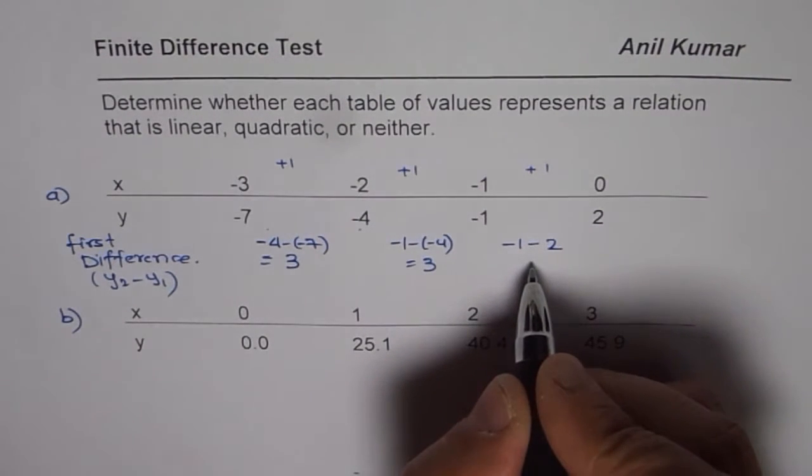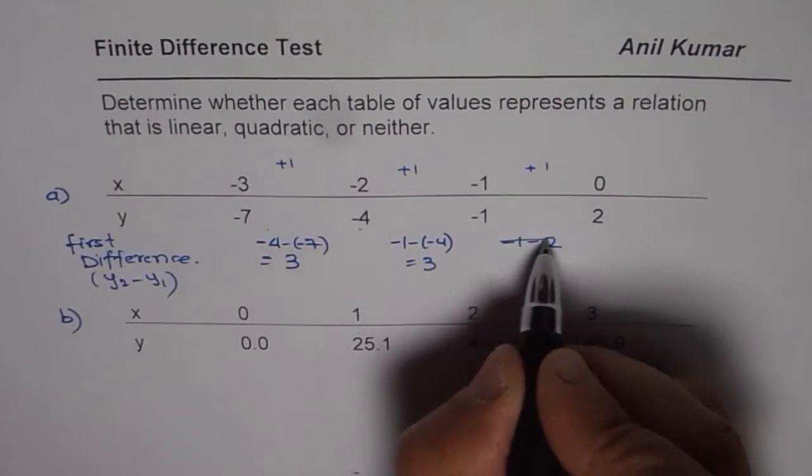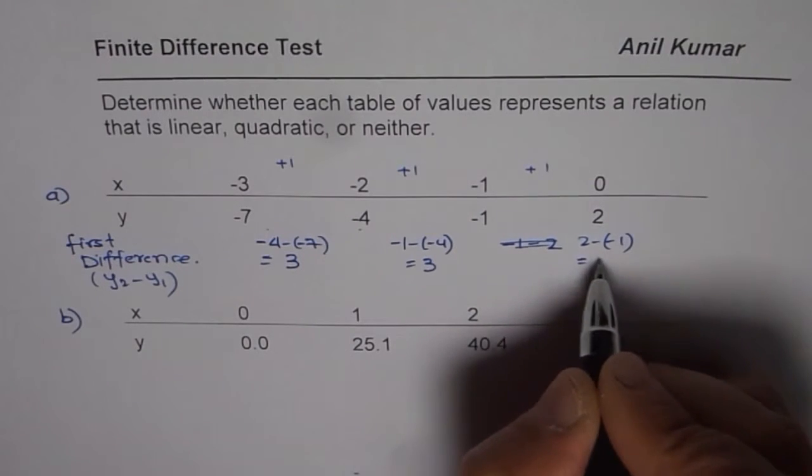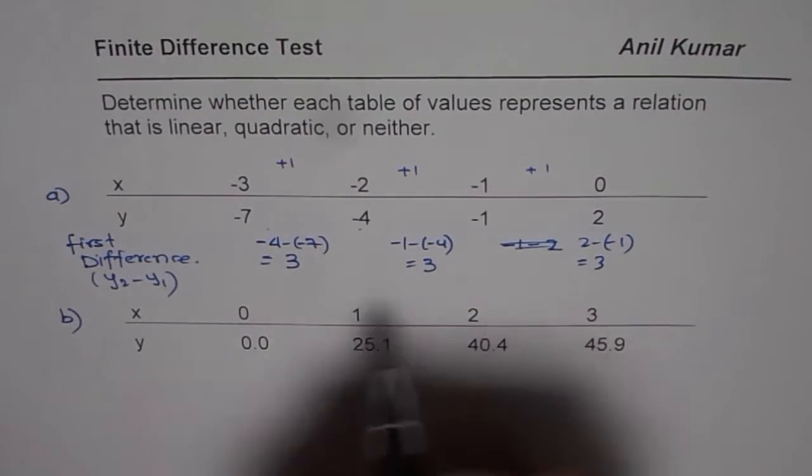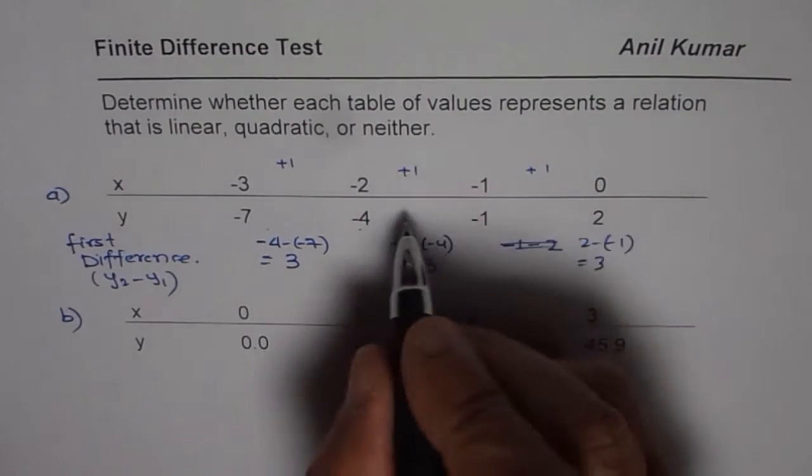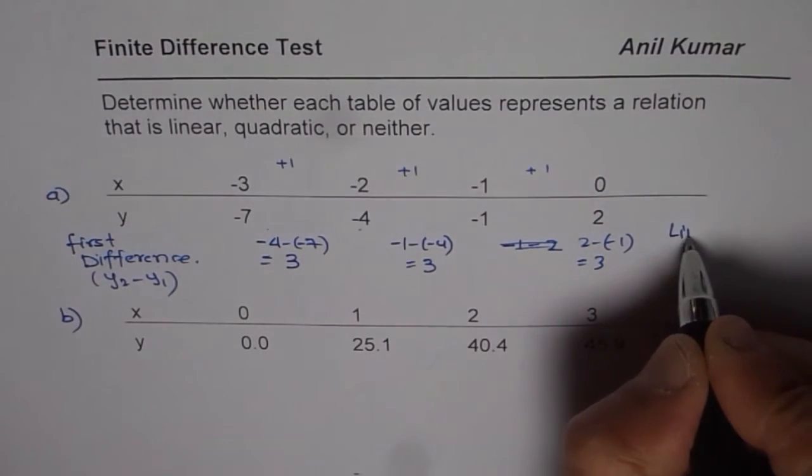And then we have 2 minus minus 1, and that is equal to 3. So, what we see here is that the first difference is constant. It is equal to 3. And therefore, this data represents a linear relation.